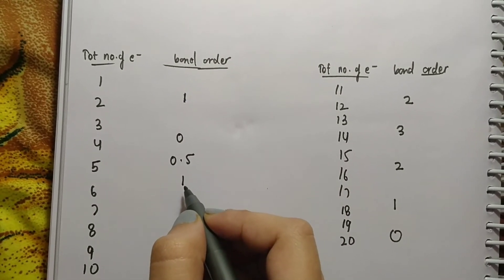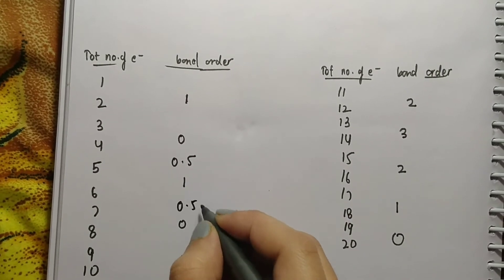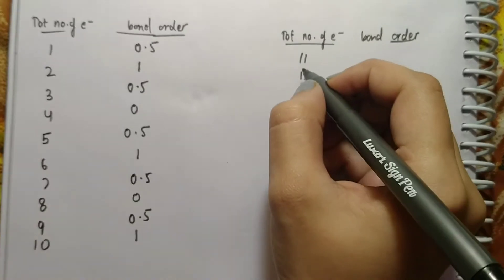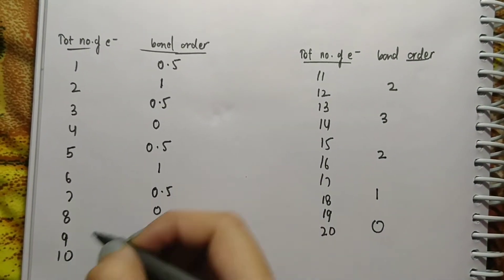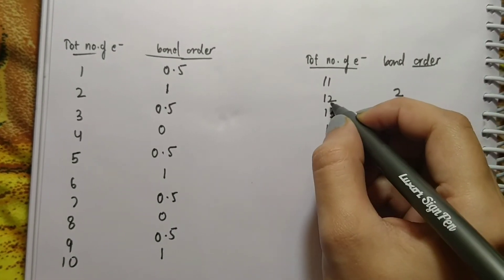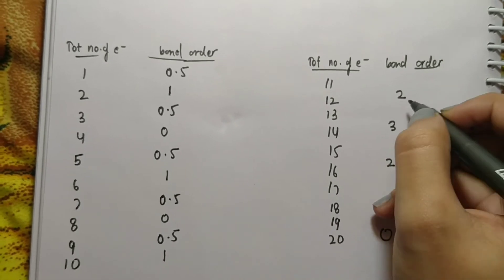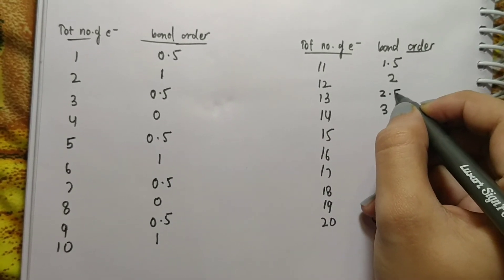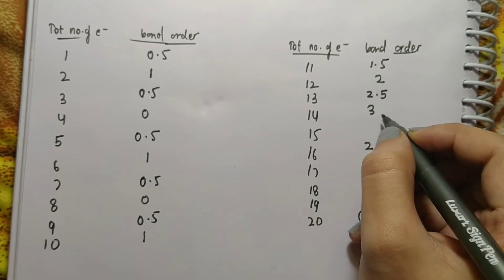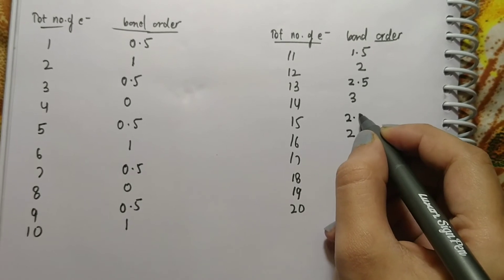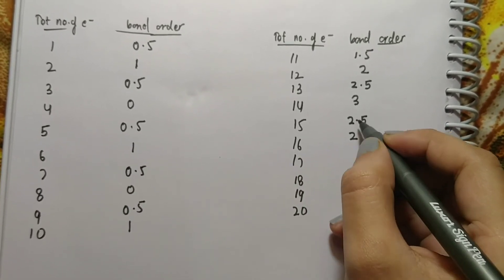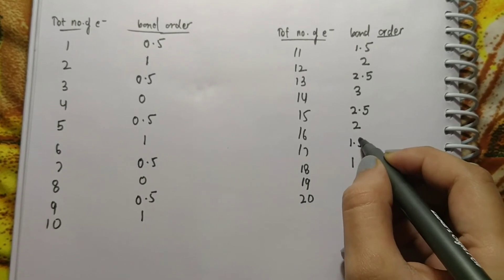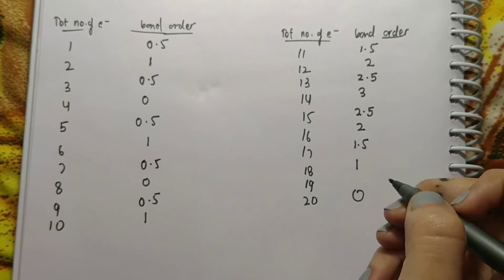The same applies for other odd electron counts. If a species contains 11 electrons, we see 11 comes between 10 and 12 — 10 has bond order 1 and 12 has bond order 2, so we subtract 0.5 from 2, giving the answer 1.5. In case of 13 electrons, the answer will be 2.5 because it comes between 12 and 14, and we subtract 0.5 from 3. In case of 17 electrons, the answer will be 1.5 because it comes between 16 and 18 — we subtract 0.5 from 2. And in case of 19 electrons, the answer will be 0.5.